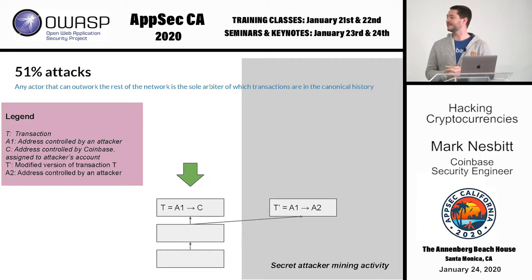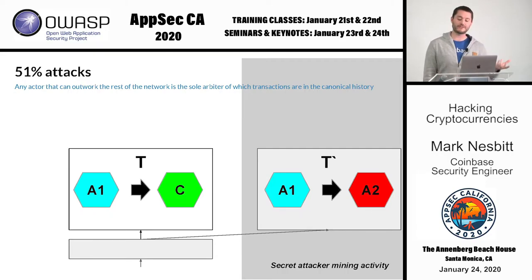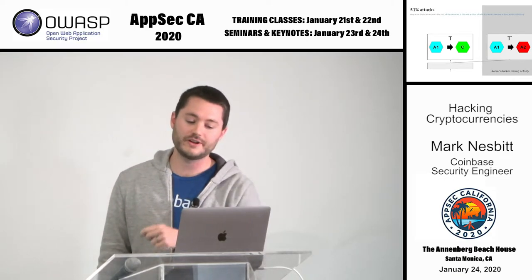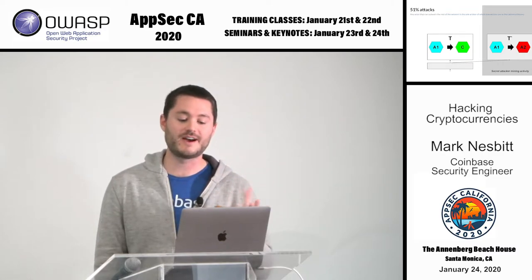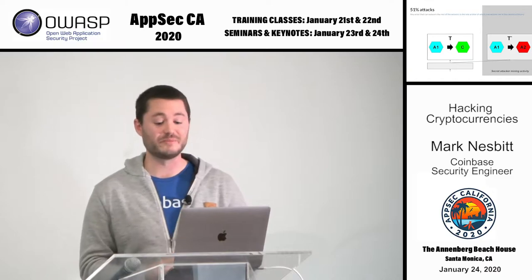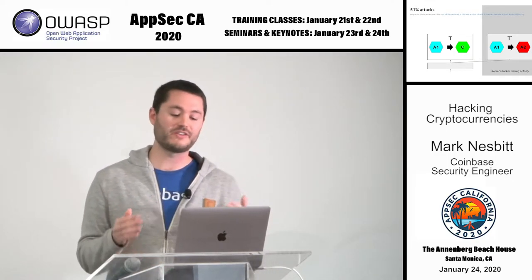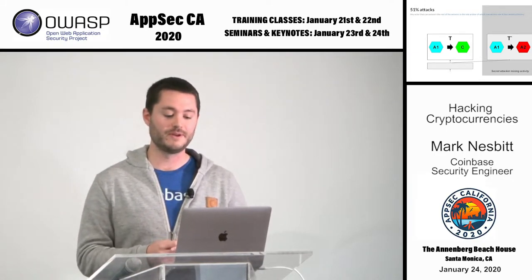Now imagine this customer is actually an attacker with the ability to outwork the entire rest of the MUH network — 51% of the mining power. The attacker creates transaction T, sending some MUH to their Coinbase account. T is quickly included in a block. Simultaneously, the attacker creates T prime, a second transaction. Addresses with A are attacker-controlled; address C is controlled by Coinbase. In transaction T — the public transaction everyone can see — the attacker sends funds from A1 to their Coinbase account. In transaction T prime, those same funds in A1 are sent to another attacker-controlled address A2. T and T prime cannot exist in the same transaction history since they both consume the funds at A1. As soon as one is accepted as valid, the network considers the other invalid. This is called a double spend — same money being spent twice.